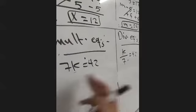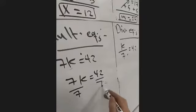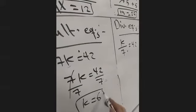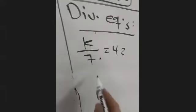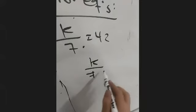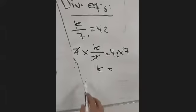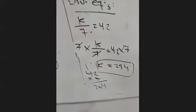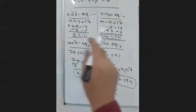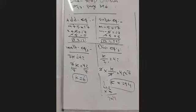Multiplication and division are opposites of each other. If we have multiplication, we divide both sides by the coefficient — for example, 7k equals 42, divide both sides by 7, so k equals 6. If we have division, we multiply both sides by the divisor of the variable — for example, k over 7 equals 42, multiply both sides by 7, so k equals 294.